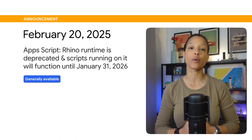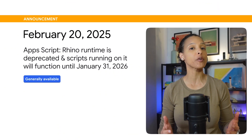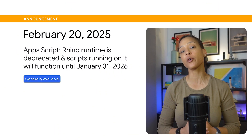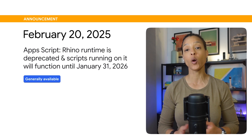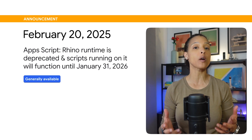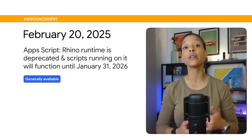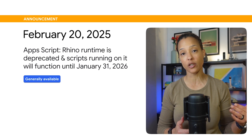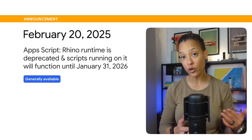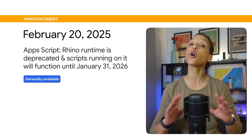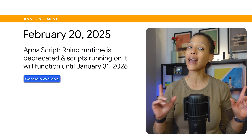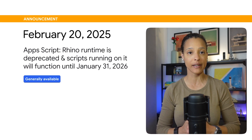The AppScript Rhino runtime has been deprecated as of February 20, 2025. While scripts that run on Rhino will continue to work until January 31, 2026, they will no longer function after that date. If you still have scripts running on Rhino,